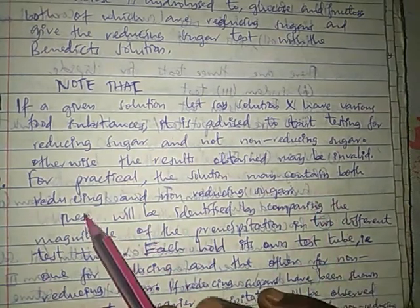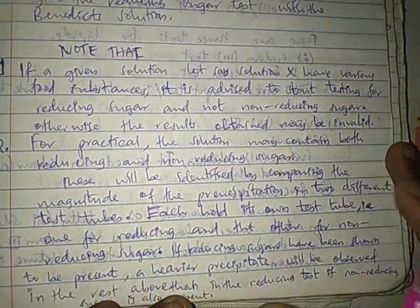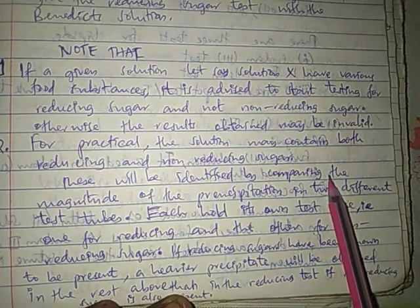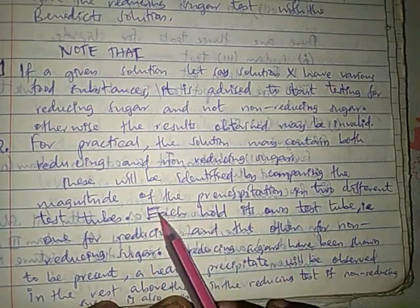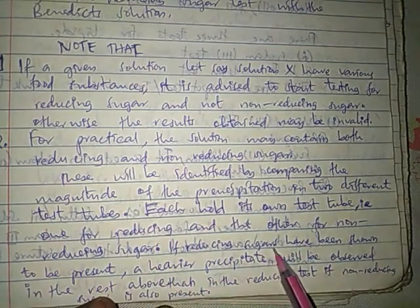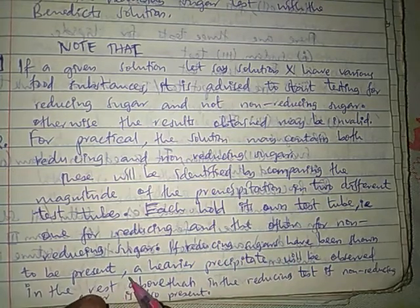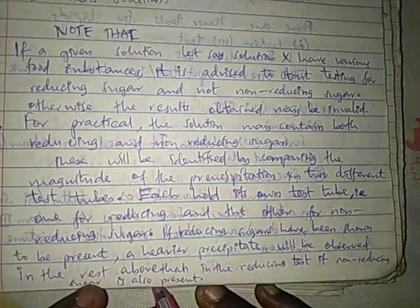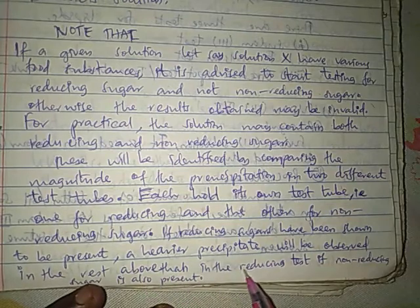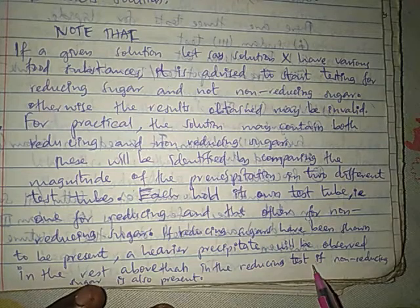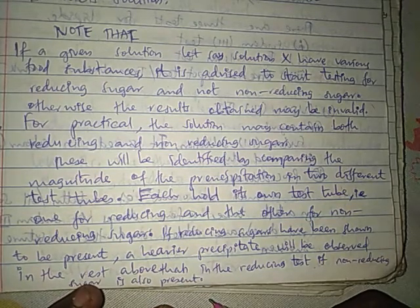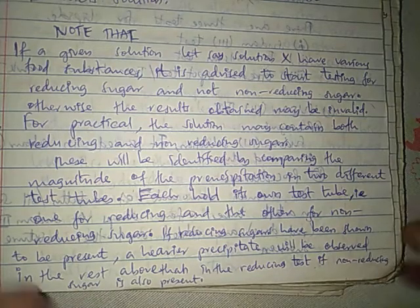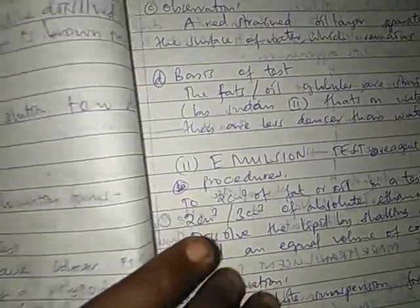For a practical, the solution may contain both reducing and non-reducing sugars. These will be identified by comparing the magnitude of precipitation in the two different tests. Each test is done in its own test tube — one for reducing sugar and the other for non-reducing sugar. If reducing sugars have been shown to be present, a heavier precipitate will be observed in the non-reducing sugar test than in the reducing sugar test, because the non-reducing sugar adds additional precipitation.